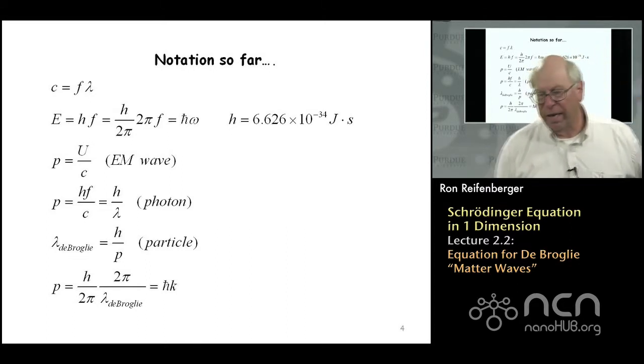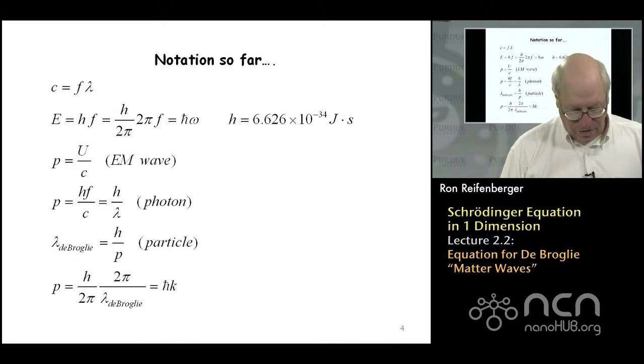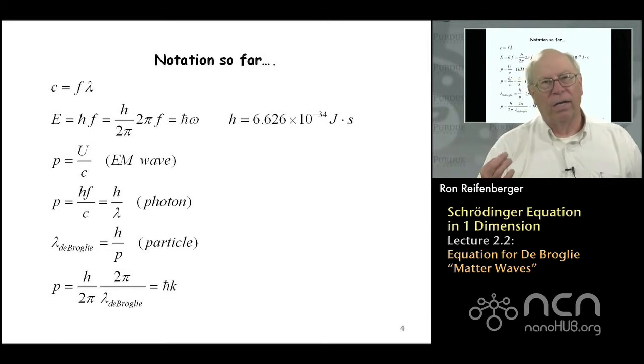From that concept, de Broglie said, well, maybe matter, maybe particles have wavelengths given by the de Broglie wavelength. It's very similar in form to the wavelength lambda of a photon in terms of its momentum P. So this gives rise to the definition of the de Broglie wavelength. And then lastly, we can always write the momentum of a particle P in terms of the de Broglie wavelength by multiplying and dividing by 2π. This gives rise to this famous formula P = ℏk that we'll see over and over again in the rest of this week.